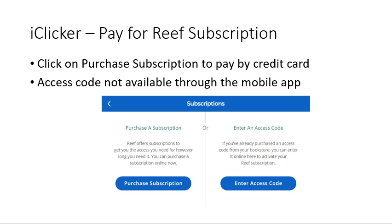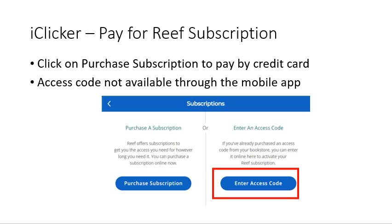Click on 'Purchase Subscription' to pay by credit card. If you have an access code, click on 'Enter Access Code' instead. As of the time this video was made, the access code option is not available through the mobile app — you have to log in through an internet browser to redeem an access code.